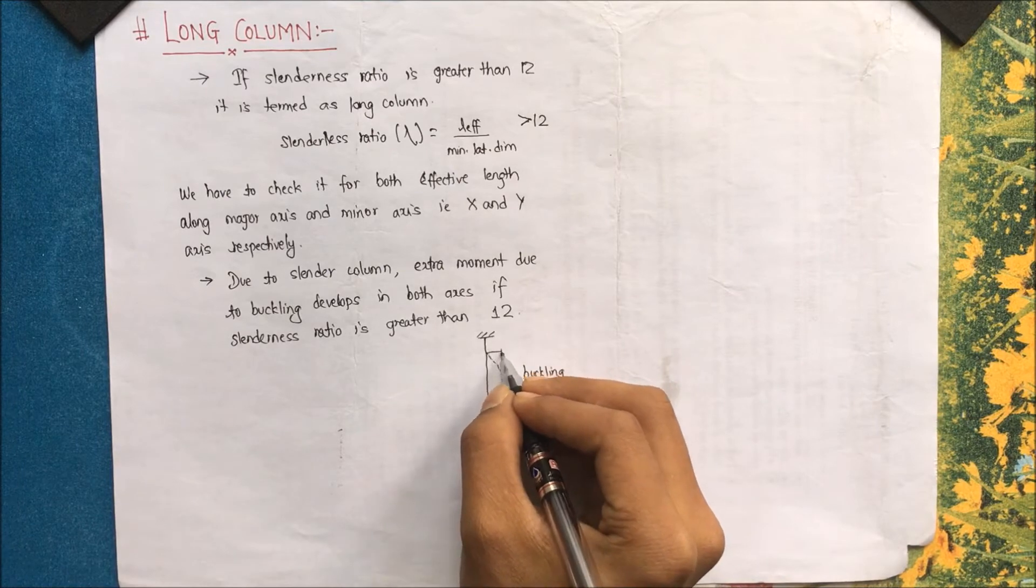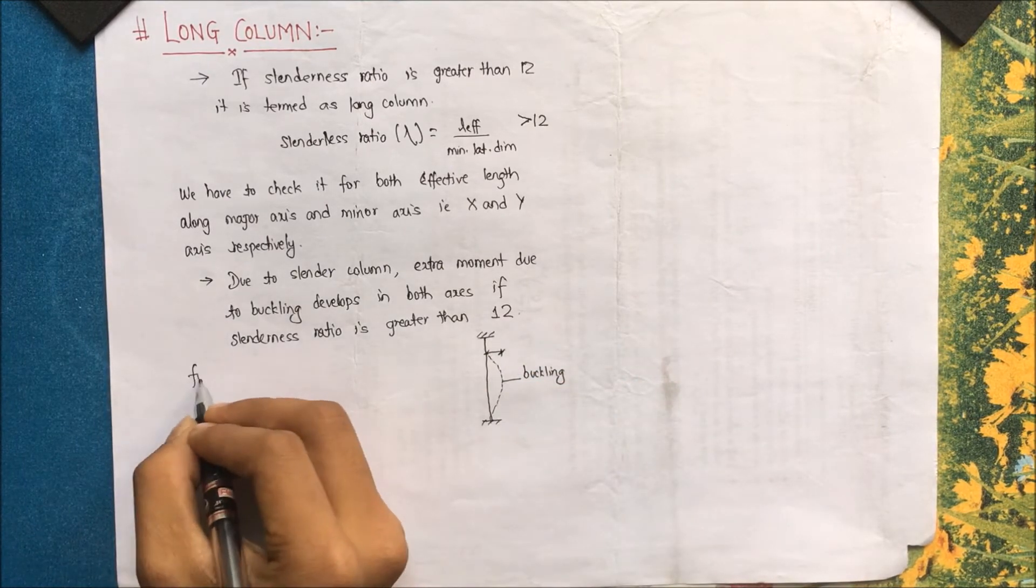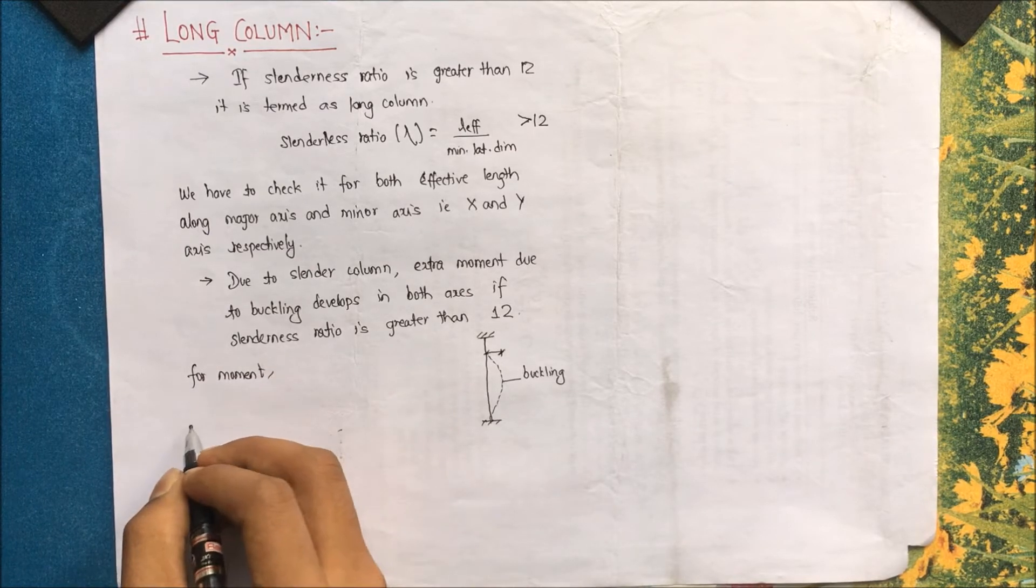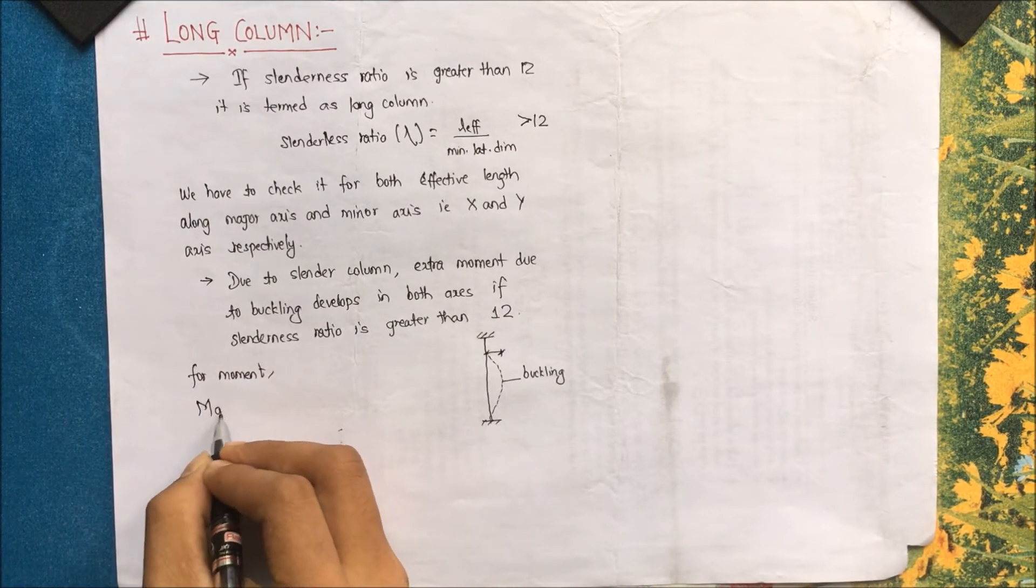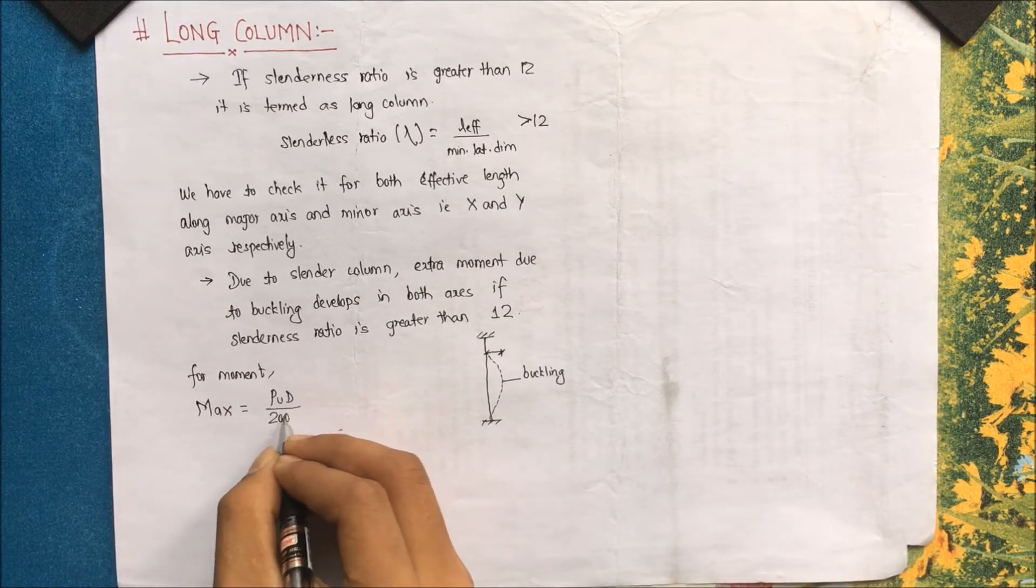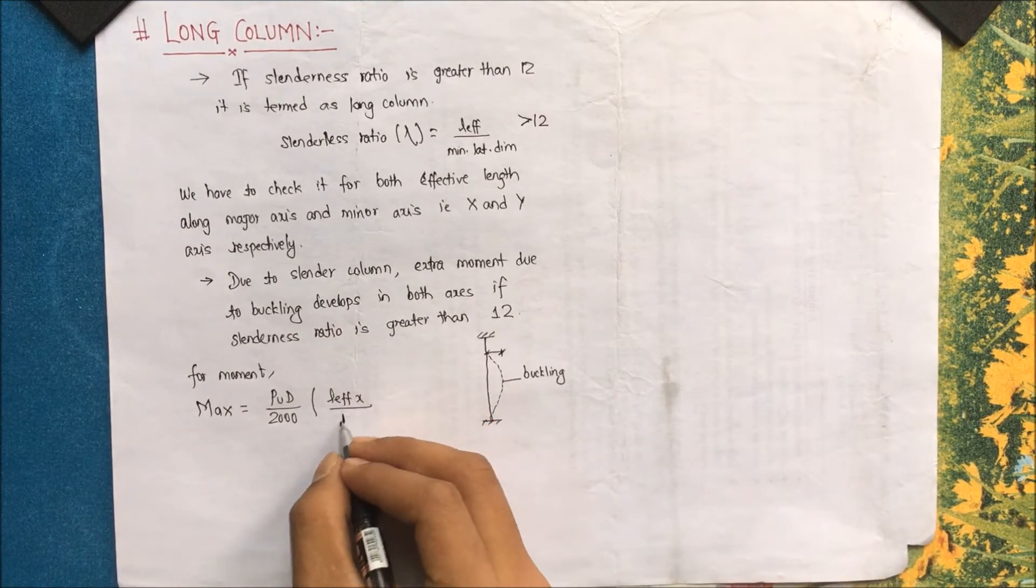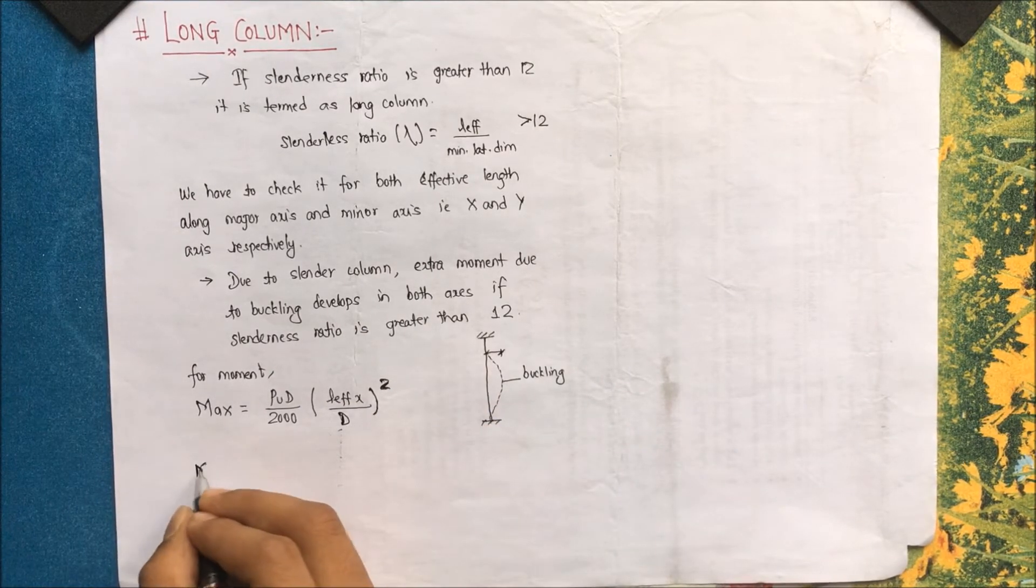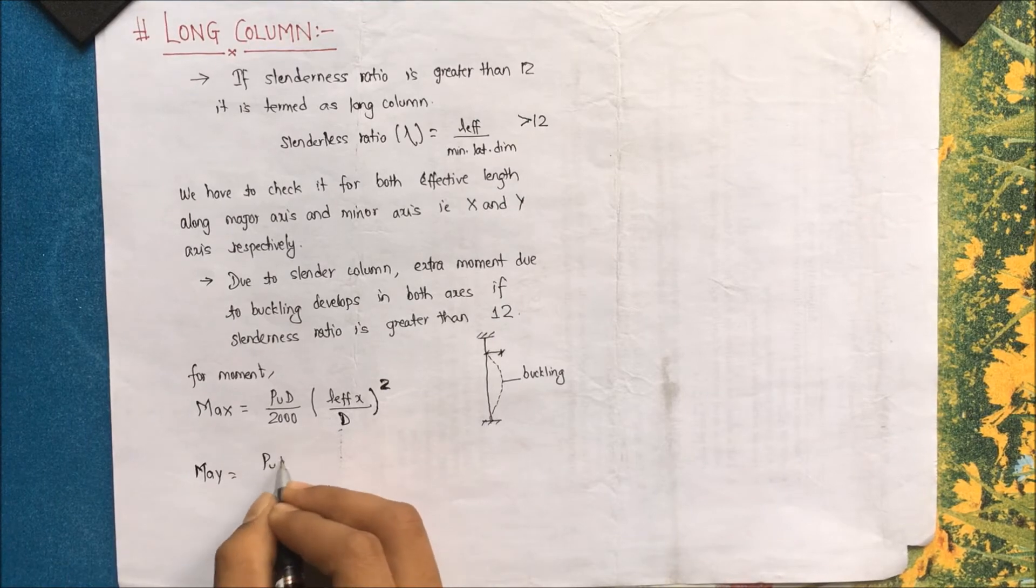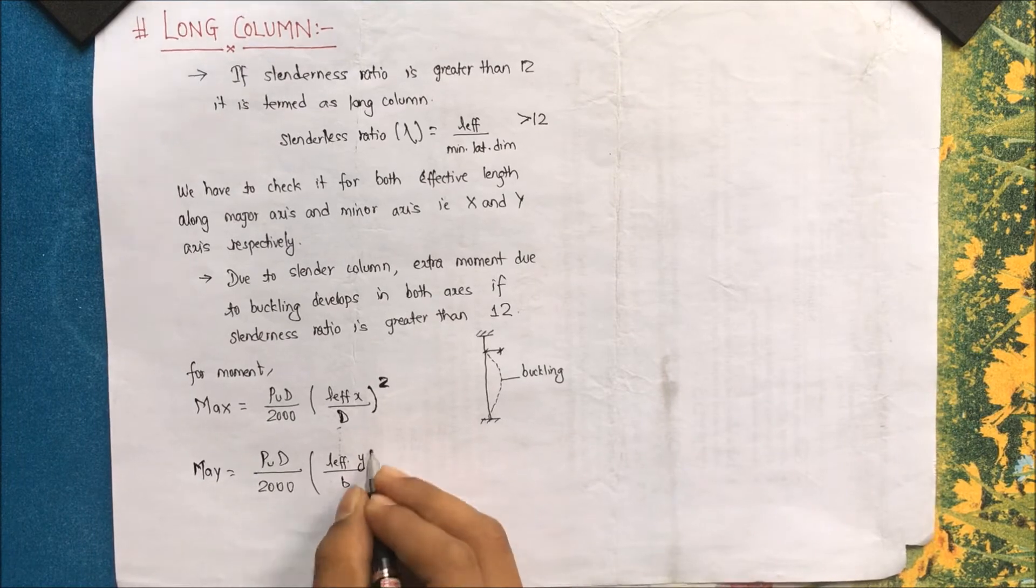This buckling will surely induce a moment and for this moment the code has given us the value. So moment along x-axis, that is additional moment along x-axis: M_ax equals Pu·d divided by 2000 times L effective x divided by d to the power square. Similarly M_ay, that is Pu·d by 2000 L effective y by b square. These are the additional moments.